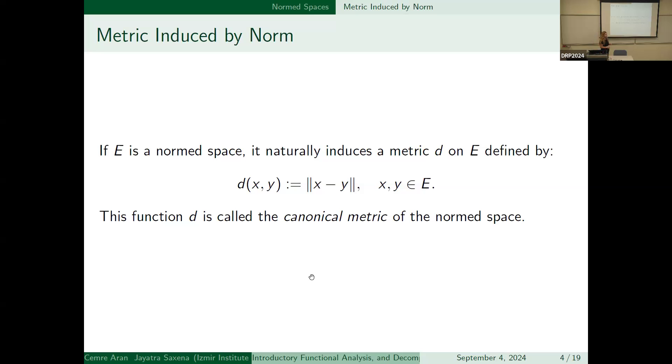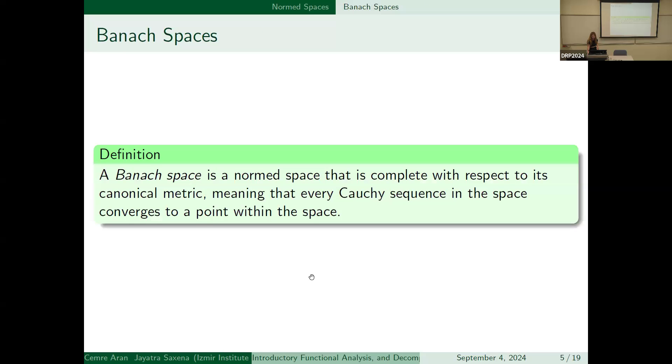And as you all know, normed spaces are metric spaces, so it induces a metric space, which is d(x,y) is equal to norm of x minus y, and this is called the canonical metric of the normed space. And we will try to build Hahn-Banach theorem, so we need Banach spaces. A Banach space is a normed space that is complete with respect to its canonical metric. It means that Cauchy sequences in the space converge to a point within the space.